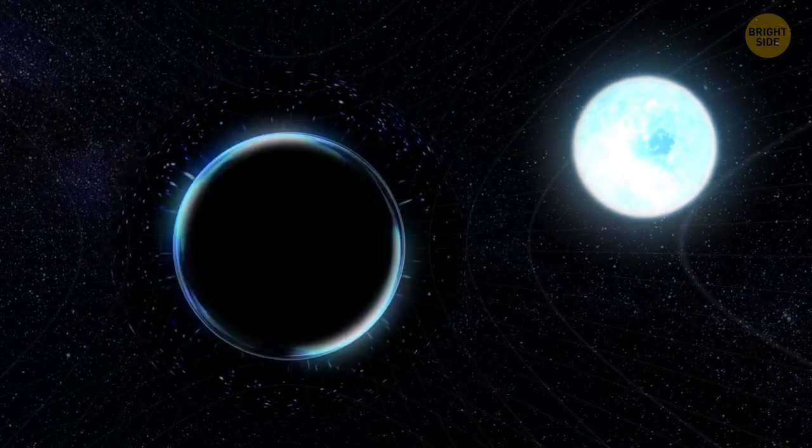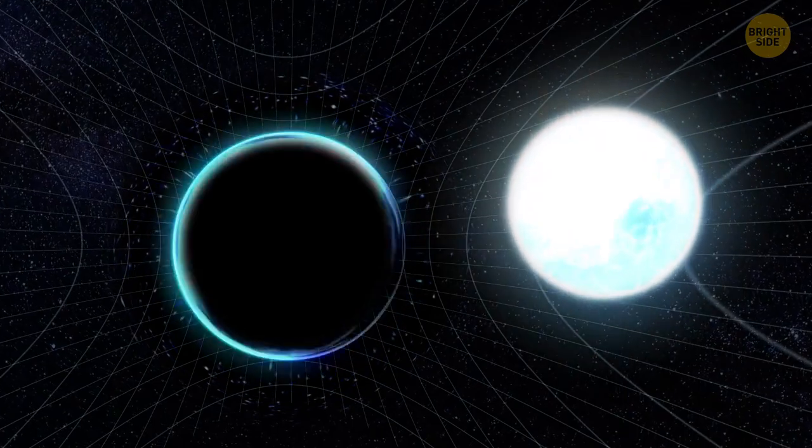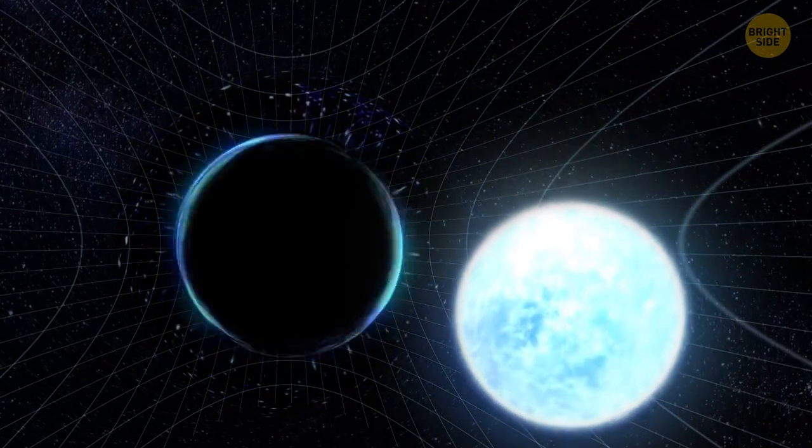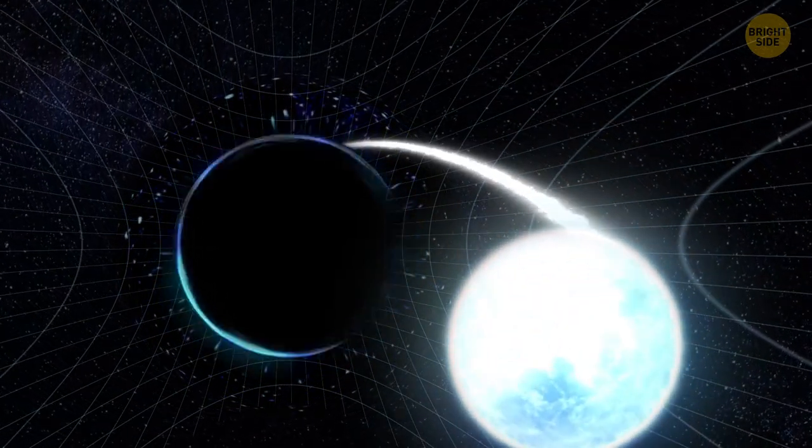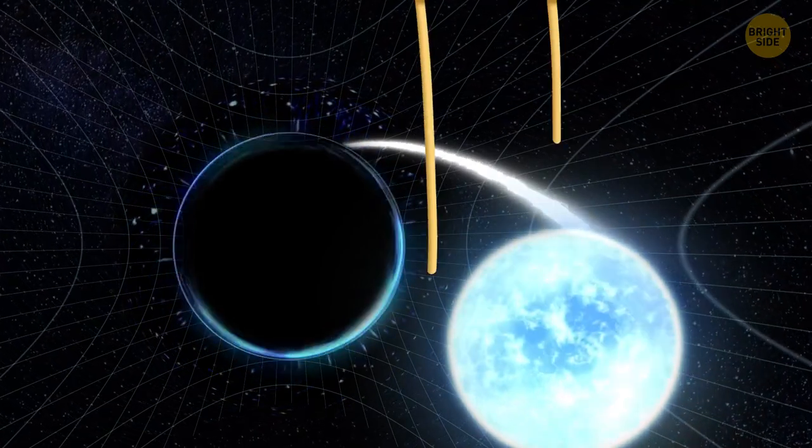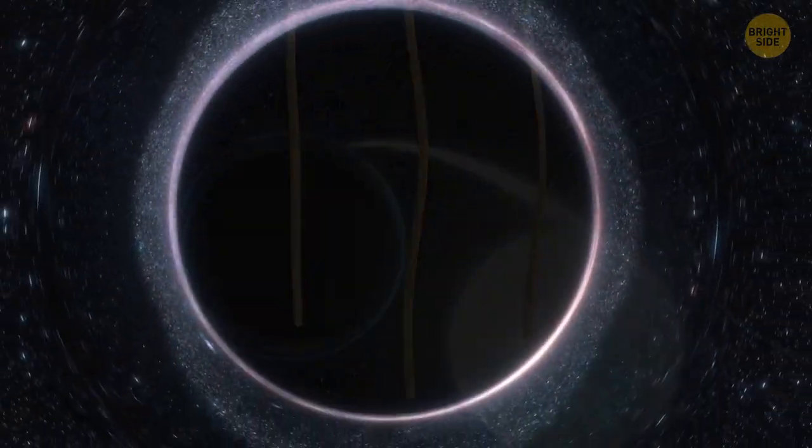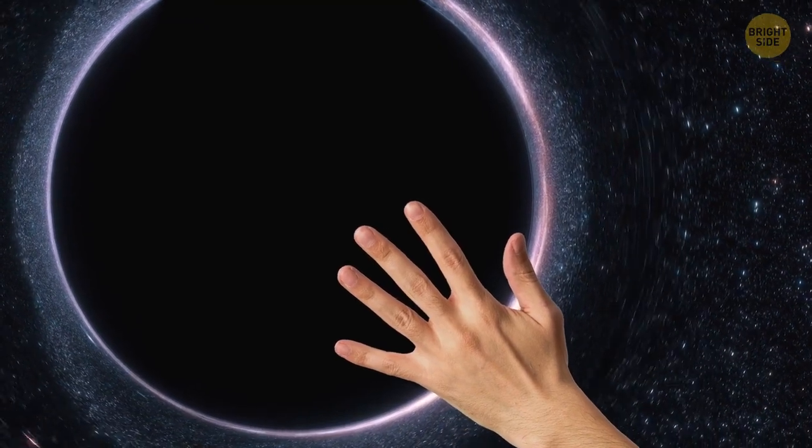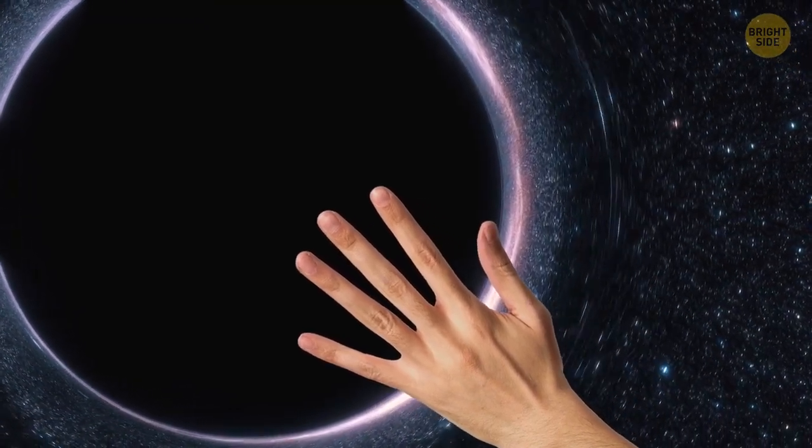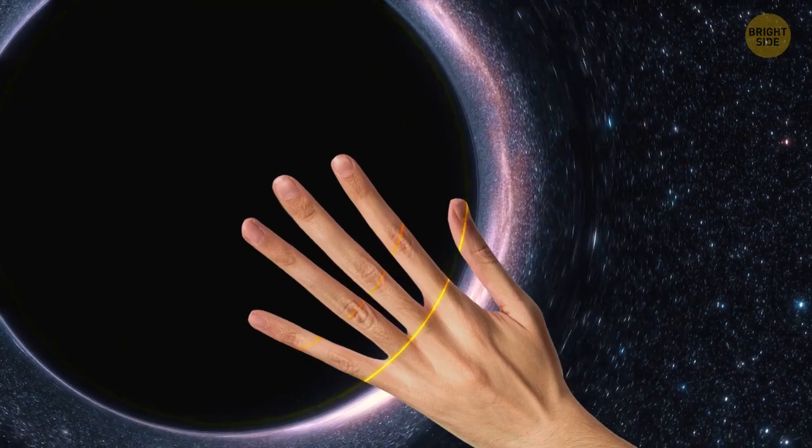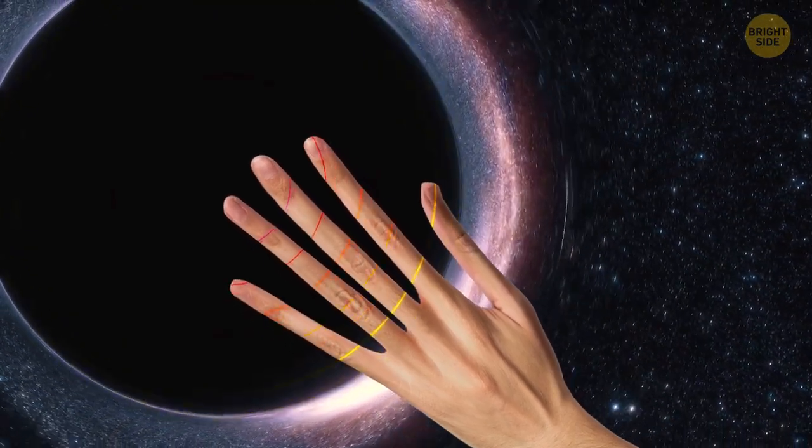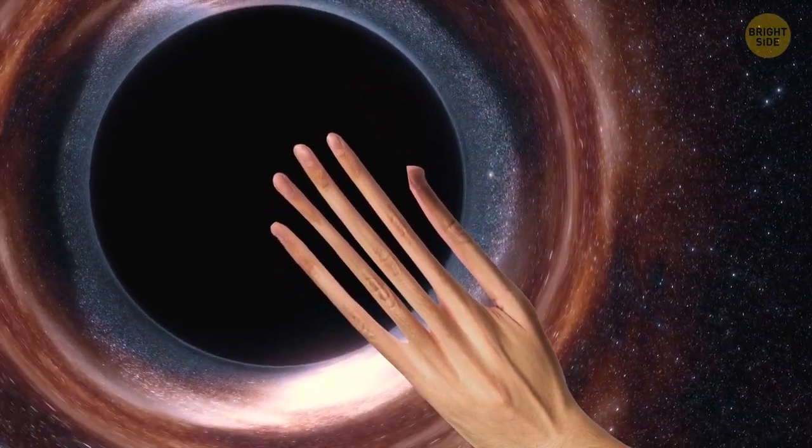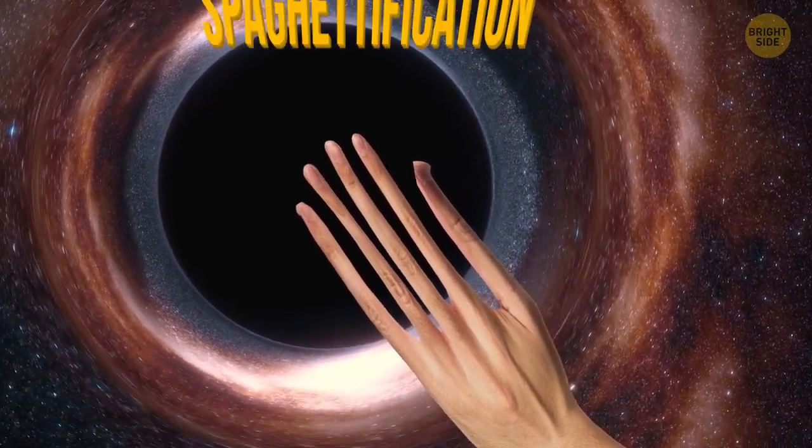As soon as a star enters the gravitational field of a black hole, it has no chance. At first, it tries to resist the pull of the black hole. Still, the star's outer layers begin to stretch toward the black hole, just like spaghetti. This is due to a powerful force of attraction. If you had the opportunity to extend your hand toward the black hole, you would see your fingers begin to stretch and elongate. This is because the force of attraction increases with every inch. Therefore, it acts stronger on your fingers than on your arm. That's why this process of pulling objects into a black hole is called spaghettification.